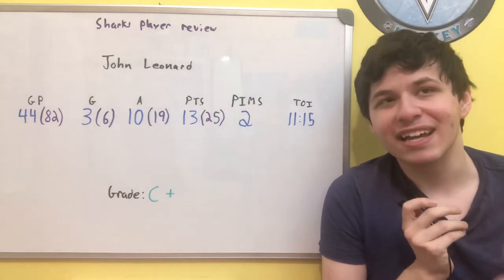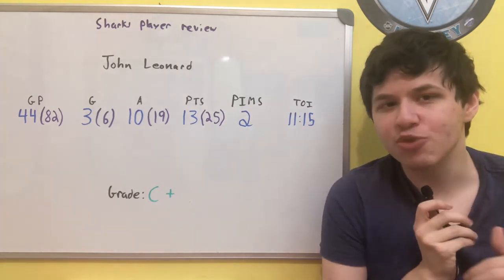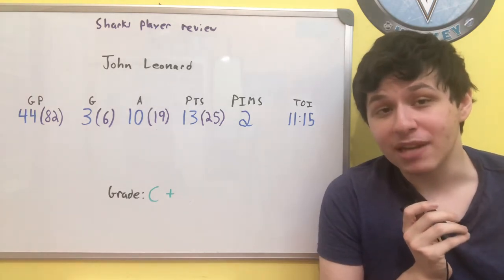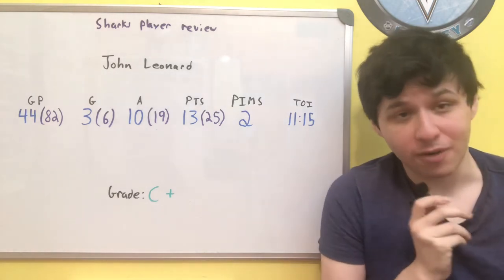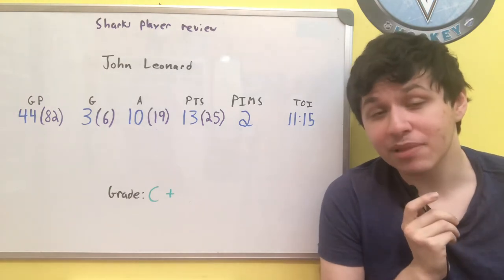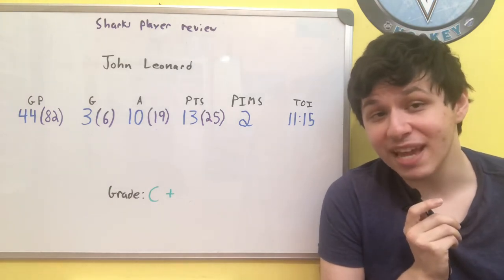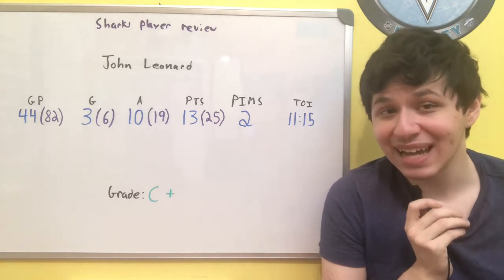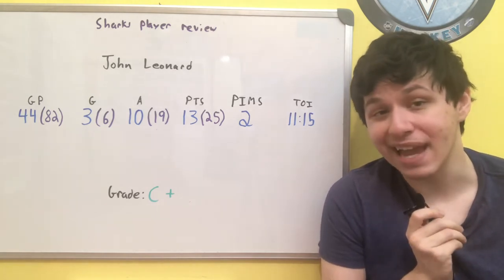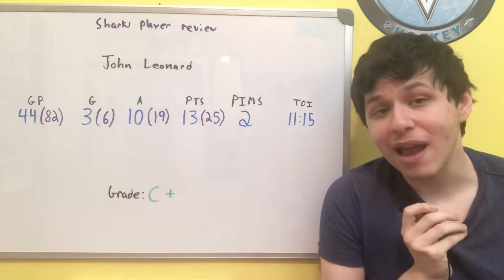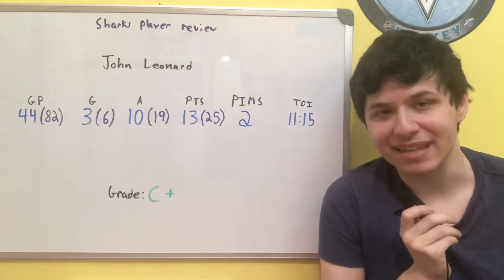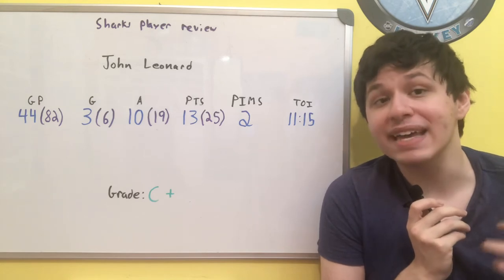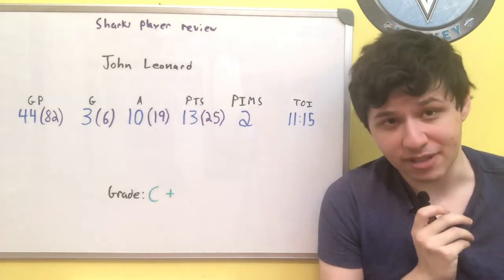The thing is though, it could also be showing that he wasn't necessarily super engaged with the game. When you take a look at net penalties, when we go penalties drawn minus penalties taken, he was actually only a plus one, because when you take his one penalty taken, he only had two penalties drawn, so it kind of evens out a bit there. So while it's not negative, which is a good thing, and two penalty minutes is never going to be a bad thing necessarily, it does go to show that maybe Leonard wasn't having a super high impact on the game in the offensive or defensive zone.